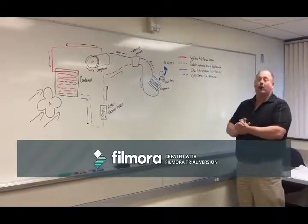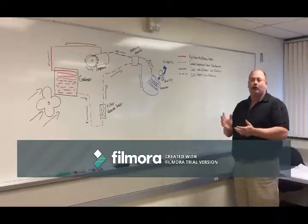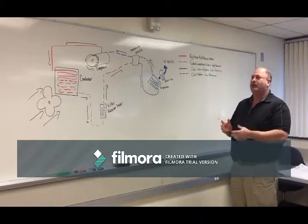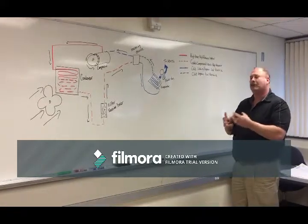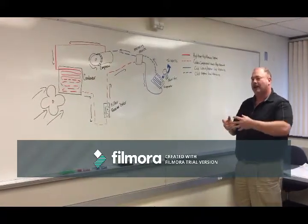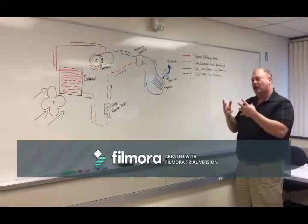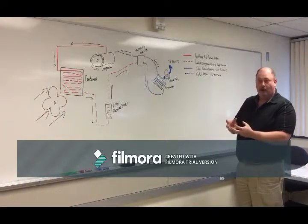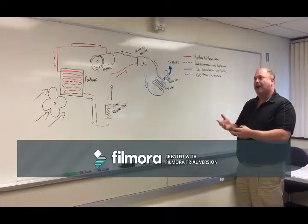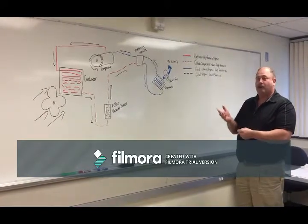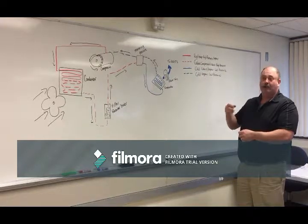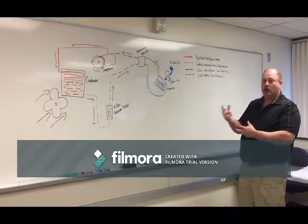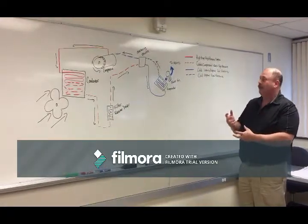Air conditioning in an automobile is a closed system. We use a refrigerant which is similar to propane in its characteristics — at a low temperature it's in a liquid form, but anything past minus 26 centigrade it wants to be in a vapor form, and that's what we're utilizing in this process.